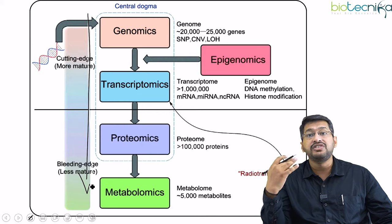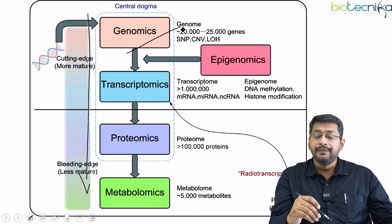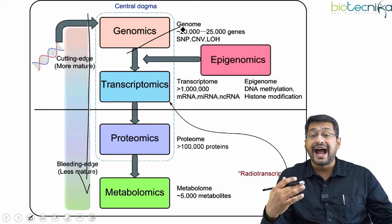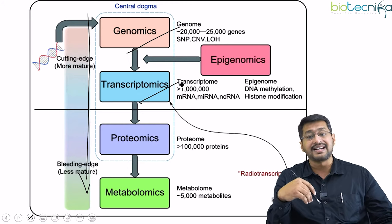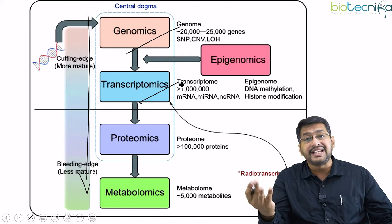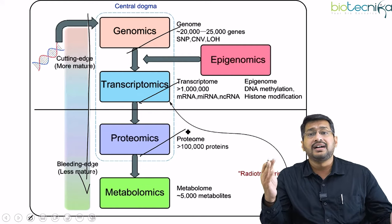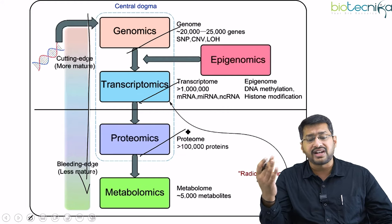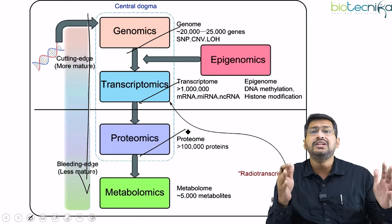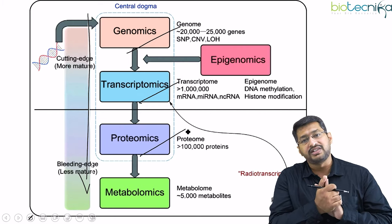The study of DNA was coined as genomics, the study of RNA and its regulation was termed as transcriptomics, and the study of proteins was called proteomics. For the last ten years, genomics, transcriptomics, and proteomics were the only three terminologies used in the central dogma.